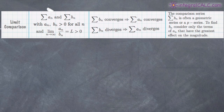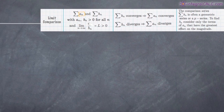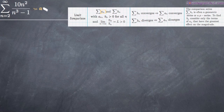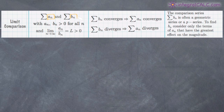With the limit comparison test — I've taken a screenshot here of the rules from the table of convergence tests on my website — what we need is two series. One is our original series, a sub n, which we've already got here. We need a second series called b sub n that we'll take from pieces of a sub n. We need to know that both series are greater than zero for all values of n, and that the limit as n approaches infinity of a sub n divided by b sub n is going to be greater than zero.